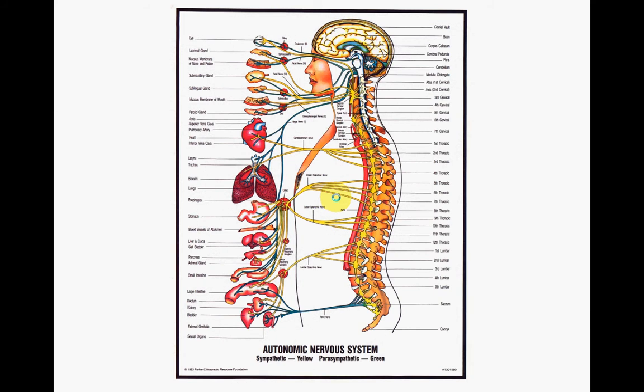The vertebrate nervous system is composed of a central nervous system and a peripheral nervous system. The central nervous system consists of the brain and the spinal cord. The peripheral nervous system consists of all the nerves outside of the brain and the spinal cord.